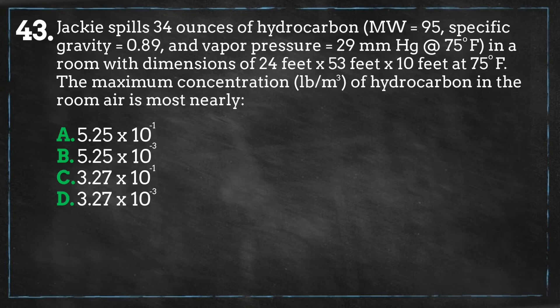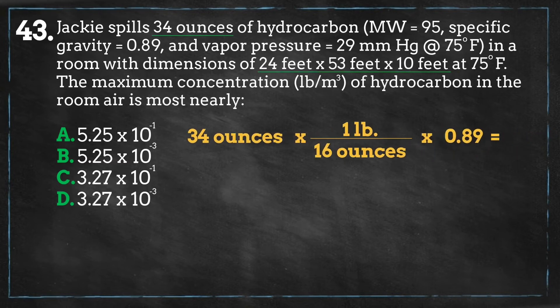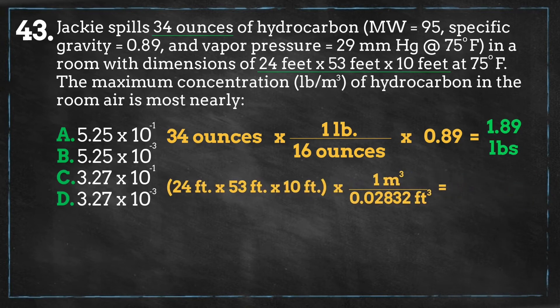Calculating the maximum concentration within the room, we have the weight of the material, 34 ounces, and we have the dimensions of the room. So, we can quickly calculate the concentrations. Let's convert the ounces of material to pounds, and we get 1.89 pounds.